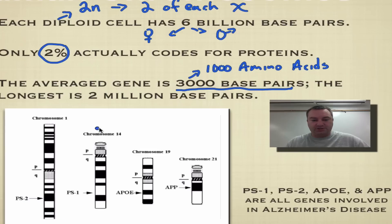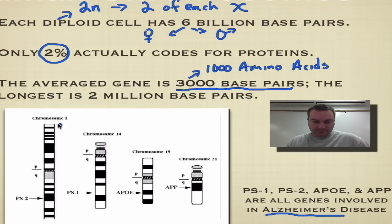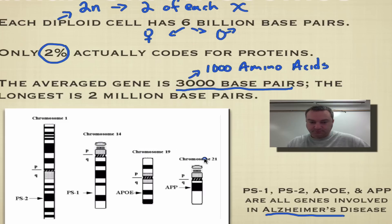I want you to look down here at this picture. What this picture is showing you is where some of the genes involved in Alzheimer's disease are found. This appears to be a polygenic trait that takes many gene pairs to make this disease show up. Some of these key genes are found on chromosome number 1, chromosome 14, chromosome 19, and chromosome 21.